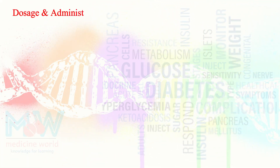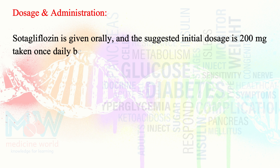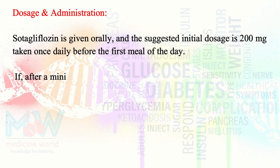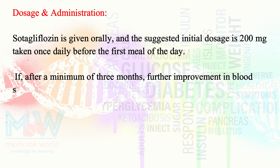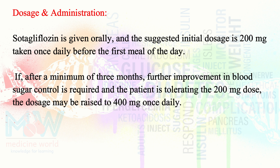Dosage and administration: Sodagliflozin is given orally, and the suggested initial dosage is 200mg taken once daily before the first meal of the day. If, after a minimum of 3 months, further improvement in blood sugar control is required and the patient is tolerating the 200mg dose, the dosage may be raised to 400mg once daily.